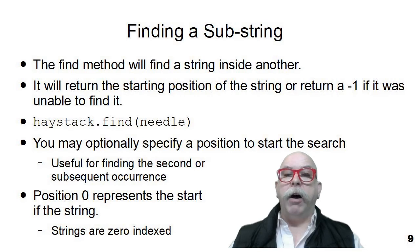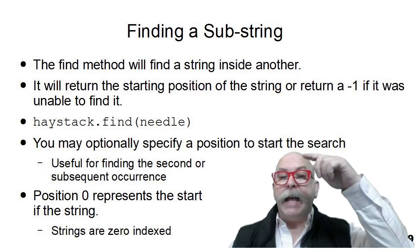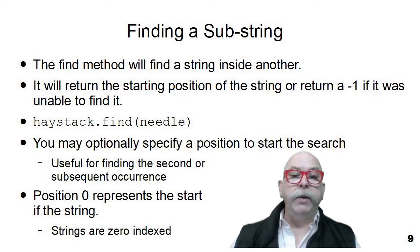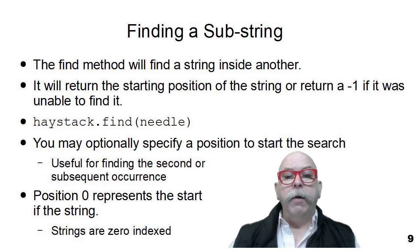The next method is called the find method, and what it returns is the location of a substring within a bigger string. So haystack.find(needle) will return the position within the haystack of where the needle substring exists. It will return a negative one if the substring does not exist in the larger string. Also remember that in Python, all of the positions are based on zero. So the first letter, if it found the needle as the first substring, it would return a zero, saying that start at the first.